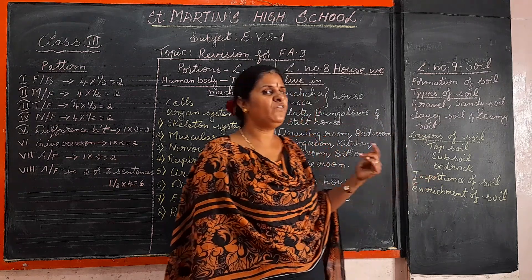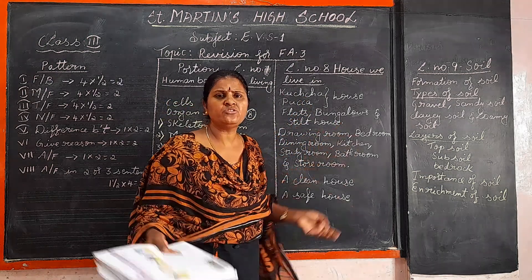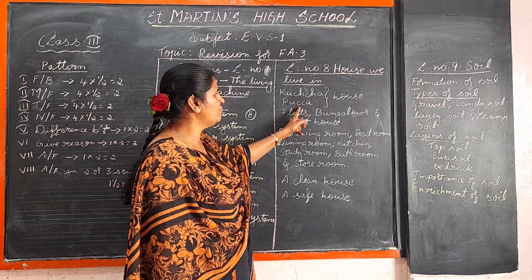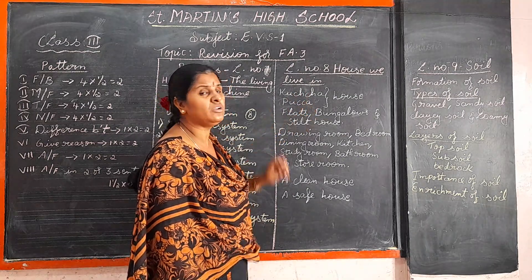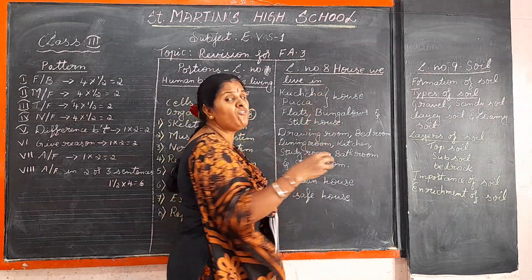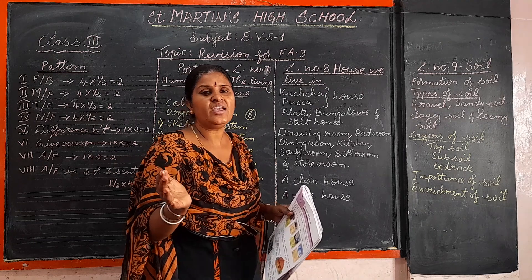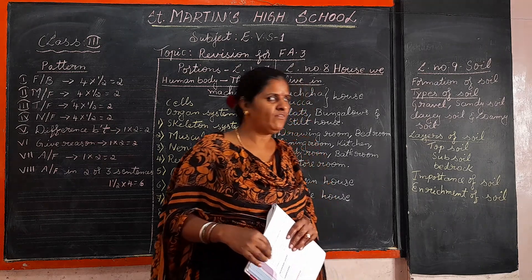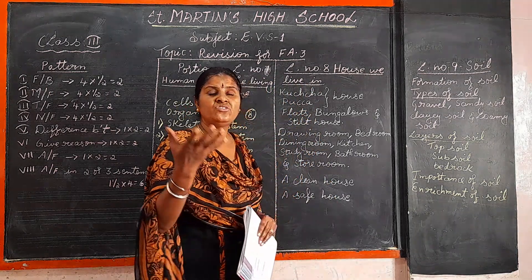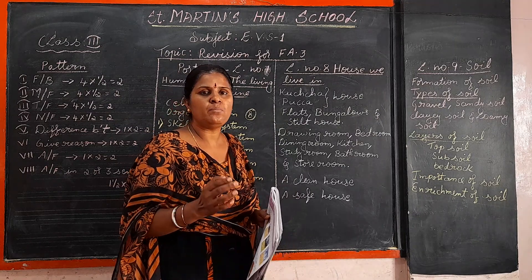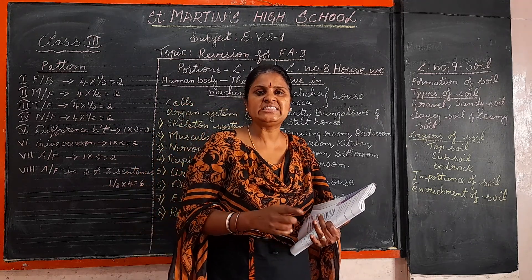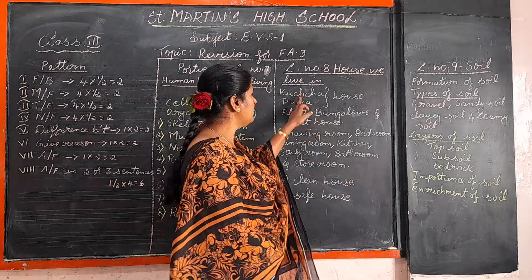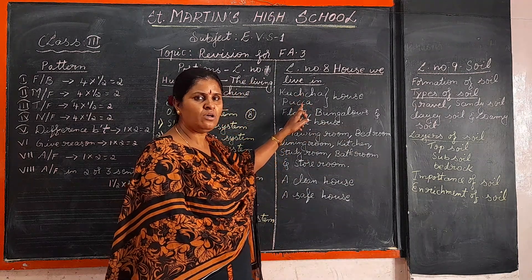We have different types of houses. The difference between a Kacha house and a Paka house: a Kacha house is made up of mud, straw, and wood — it is a temporary house, mostly found in villages. A Paka house is a permanent, strong house made up of bricks, cement, wood, iron, and steel.